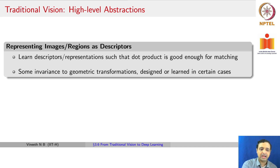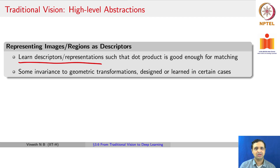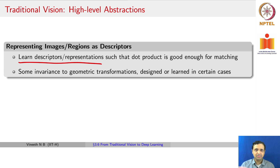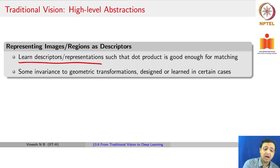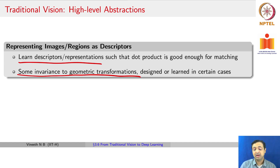The goal so far has been to learn descriptors and representations that make it easy to match — you do not want to spend too much time on matching. The key idea is to describe key points and images in such a way that a simple dot product or simple matching kernels can be used to match images or parts of images. These kinds of descriptors have some invariance to geometric transformations — scale, rotation, translation — where in certain cases that invariance is designed into the algorithm, and in other cases it may have to be learned through other means.